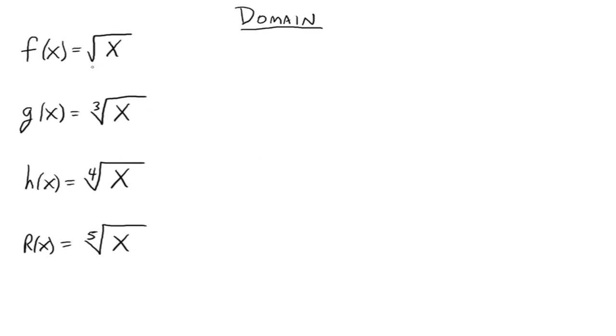The domain for the square root of x was 0 to infinity. x needed to be greater than or equal to 0. Really what this boils down to is the radicand needs to be greater than or equal to 0.